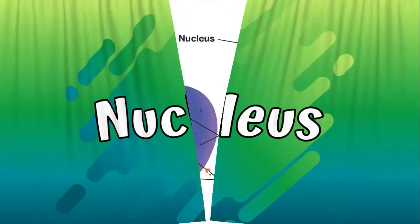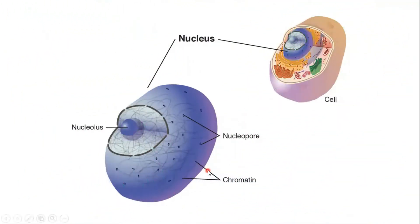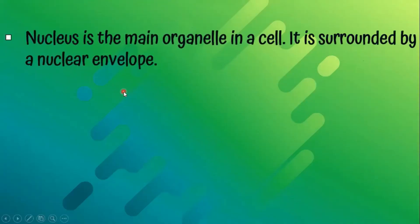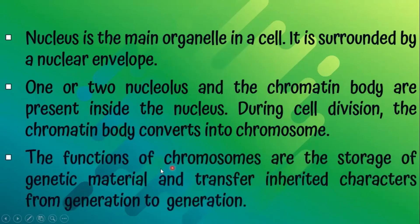Nucleus. The nucleus is the main organelle in a cell and it is surrounded by a nuclear envelope. During cell division, the chromatin body converts into chromosomes. The functions of chromosomes are the storage of genetic materials and transfer of inherited characters from generation to generation.